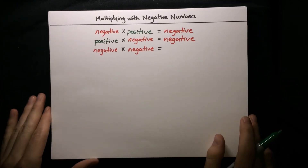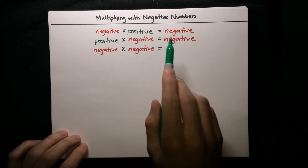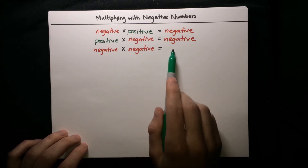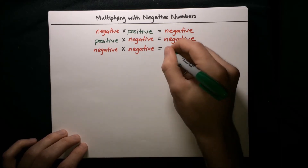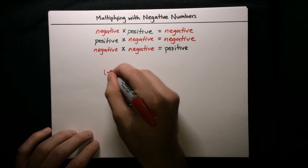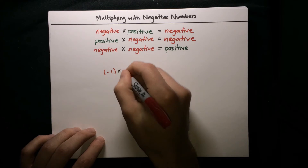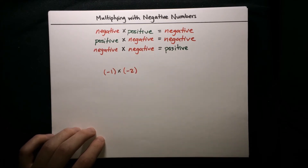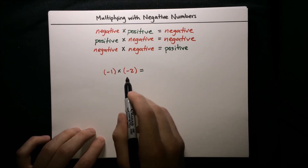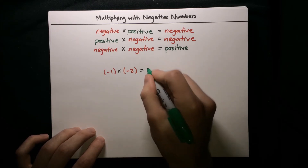Now we know that a negative times a positive is negative, and a positive times a negative is negative. But what about a negative times a negative — is that positive or negative? The answer is it's positive. For example, if we take negative 1 and multiply it by negative 2, the negatives cancel out and we get positive 2.